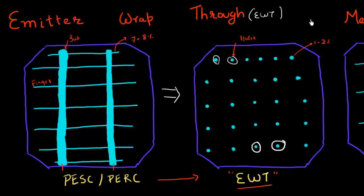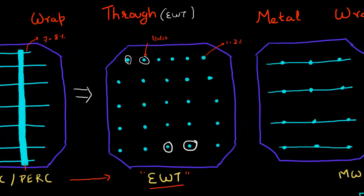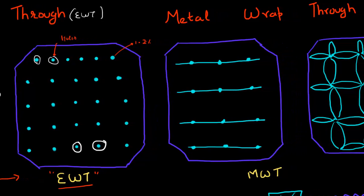So the design which is commonly used currently in the industry is this metal wrap through design. So shown here are these two examples of this metal wrap through design or MWT. And as compared to this EWT design, these designs still have a slightly larger amount of metal present on the top surface. So you can see that these fingers are still present on the top of the cell. But there are no bus bars.